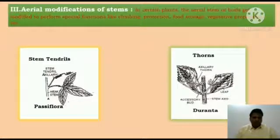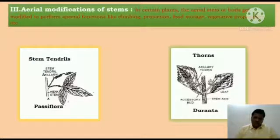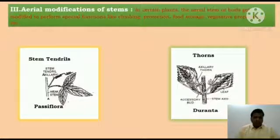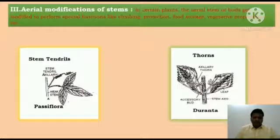The first type is stem tendrils. The stem or its branches get modified into thin, green, leafless thread-like structures called tendrils, which are meant for climbing. These may be branched or unbranched. A scaly leaf is always present at the point of branching of the tendril. Example: Passiflora.